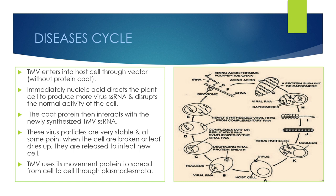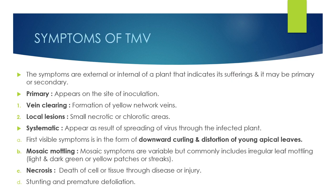TMV uses its movement protein to spread from cell to cell through plasmodesmata. Moving on to symptoms of TMV — symptoms are the external or internal expression of a plant that indicates it is suffering, and they may be primary, systemic, or secondary.